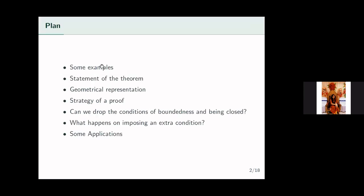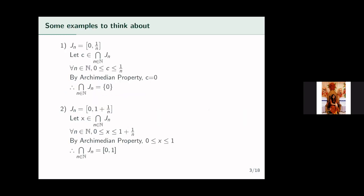Here is the plan of my talk. Before introducing the statement of the theorem, I'll give some examples so that everybody gets comfortable with the idea. Then I'll give the geometrical representation of the statement of the theorem — I'll try to show the intervals on the number line. Since this is a theorem, we can try to work backwards to figure out a strategy for our proof. Then I'll give the proof. The theorem has two main conditions: our intervals have to be bounded and they have to be closed. We'll see what happens when we ignore those conditions, and what happens when we add an extra condition. Finally, I'll end by listing some applications of the theorem.